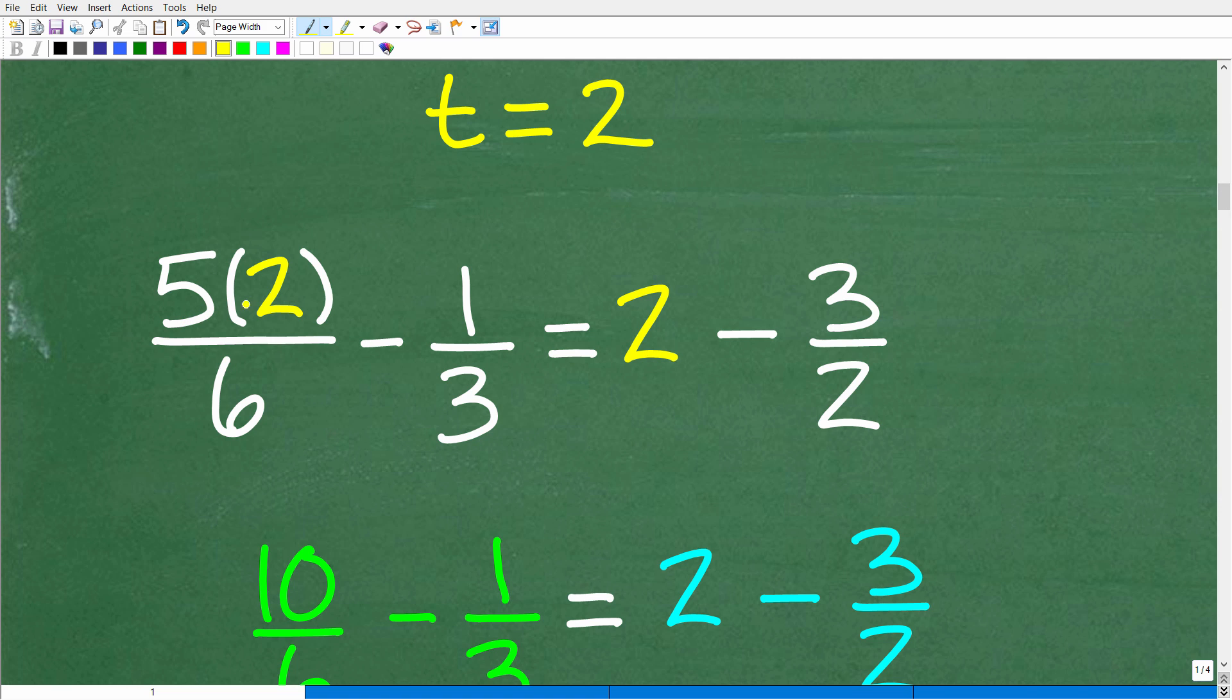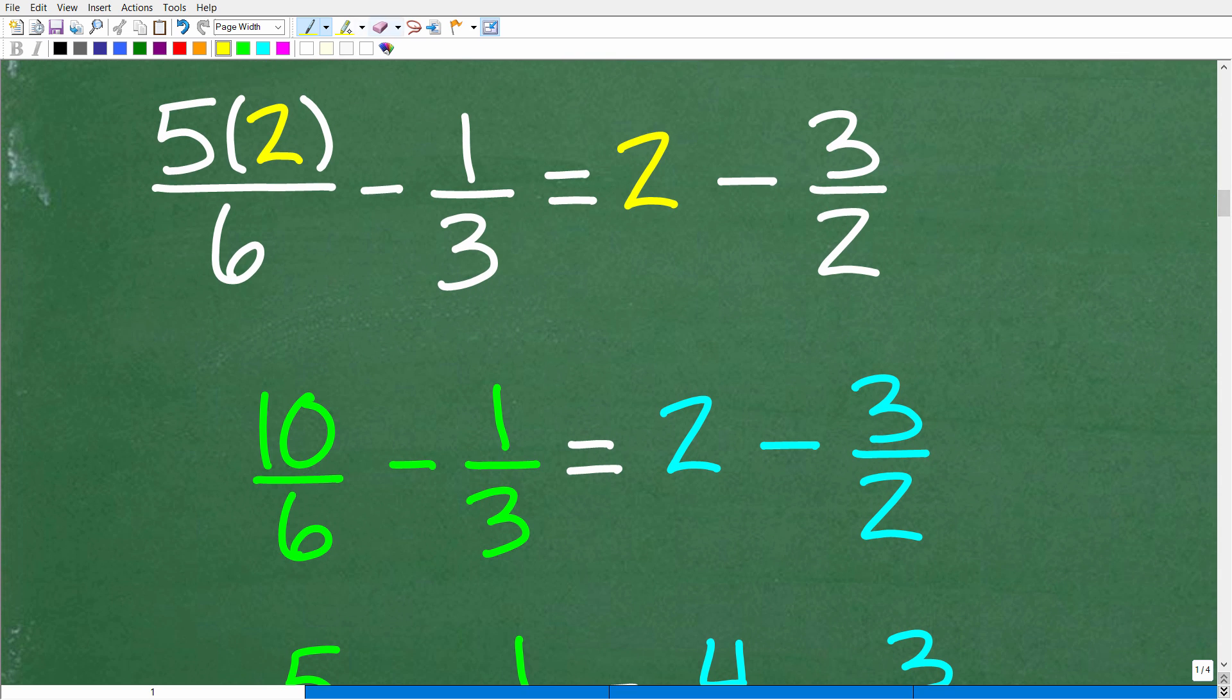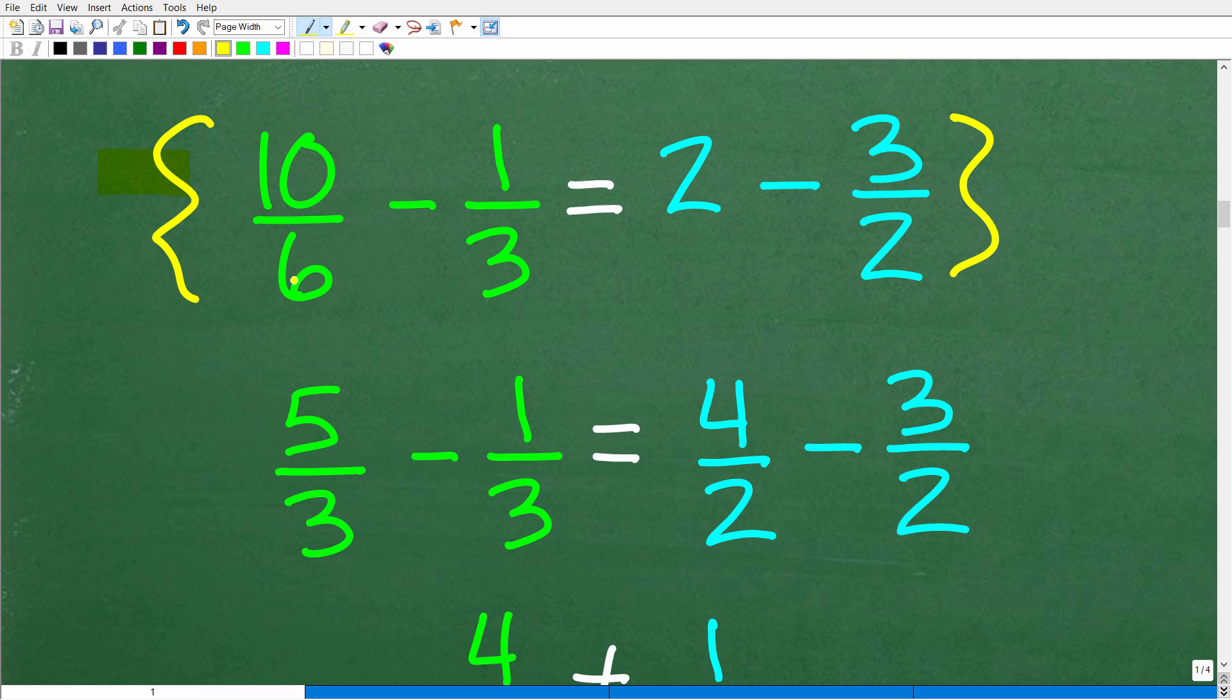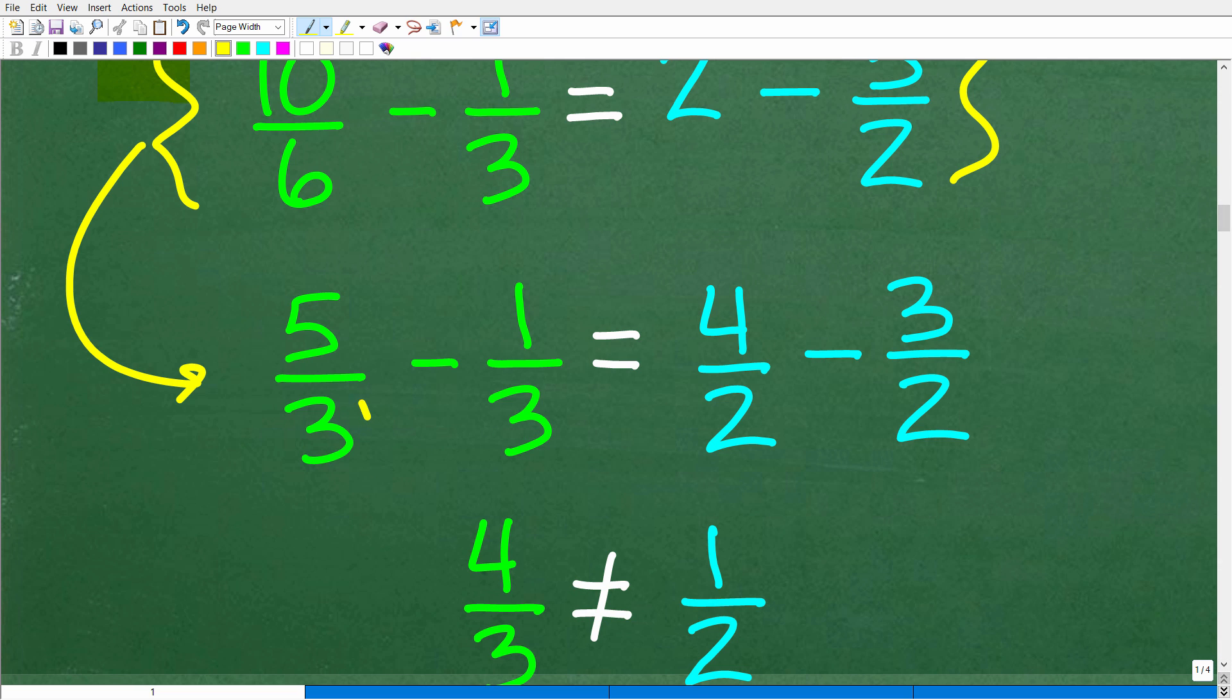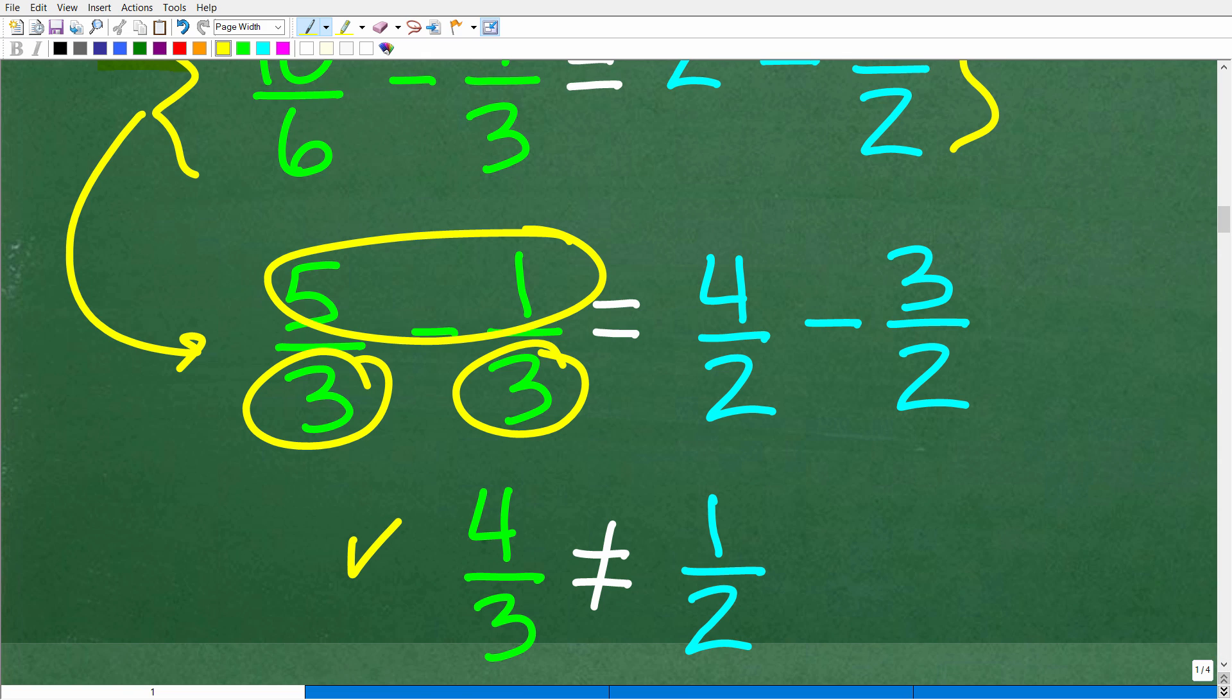Let's go ahead and do this. We're going to plug in t is equal to 2. We're going to check to see if this is the solution by replacing these t's with 2. So the result is 5 times 2 over 6 minus 1 third is equal to 2 minus 3 over 2. This becomes a number crunching operation. 5 times 2 is 10, so this is going to be 10 over 6 minus 1 third is equal to 2 minus 3 over 2.